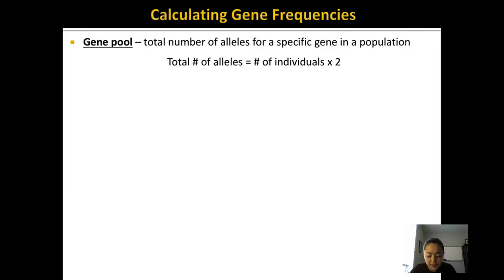Objective 2 says to calculate gene frequencies from phenotypic data. This is probably one of the most challenging things for students in this unit, but the more you practice, the easier it gets. When we calculate gene frequencies, we're calculating them based on the gene pool — the total number of alleles for a specific gene in that population.